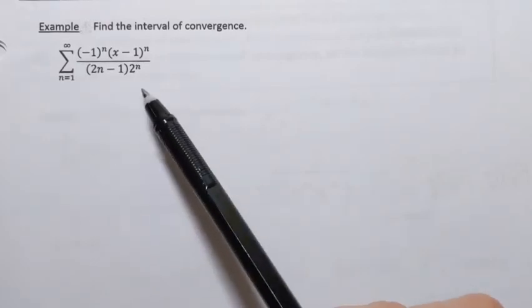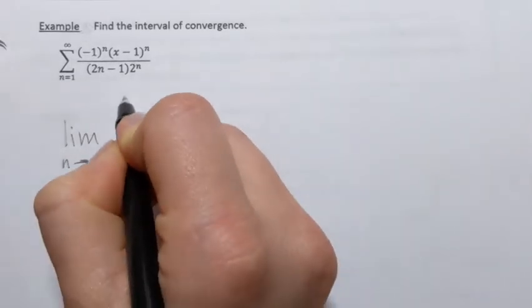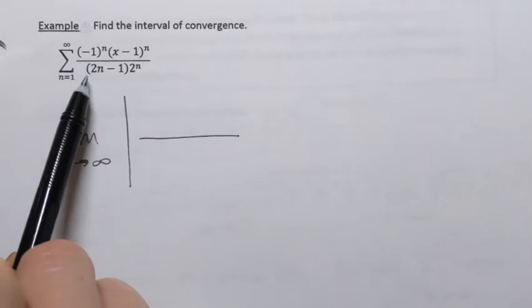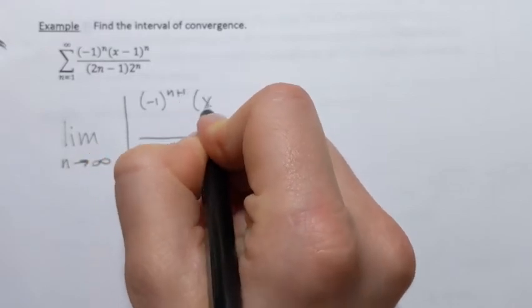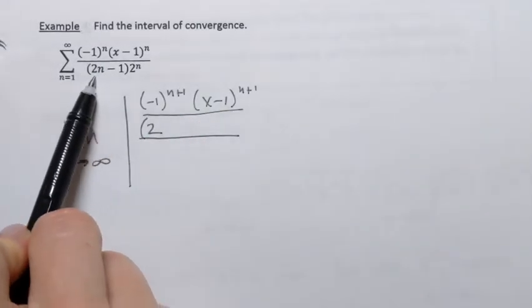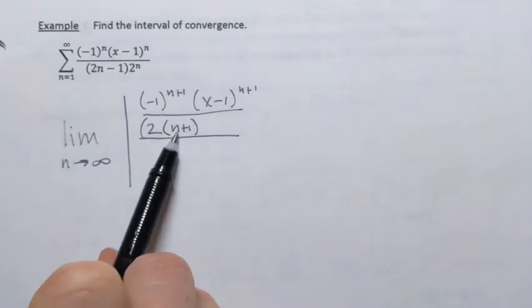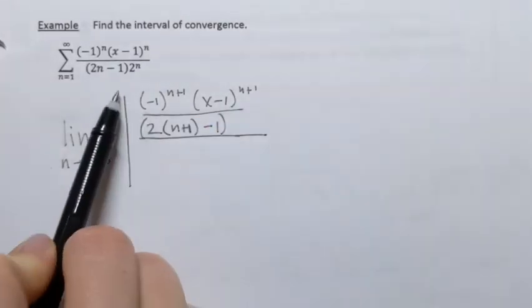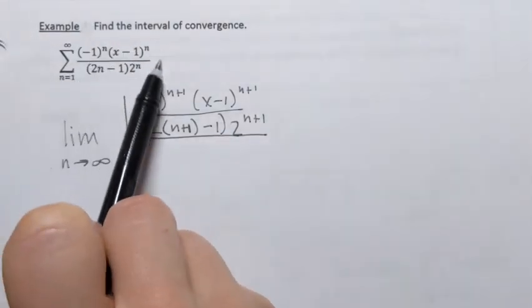We start by applying the ratio test, so we need to find the following limit: limit as n approaches infinity of the absolute value of the ratio. In the numerator we place the a sub n plus 1 term, replacing every n with n plus 1. That gives x to the power n plus 1 over 2 times n plus 1 minus 1, times 2 to the power n plus 1. In the denominator we put the a sub n term.